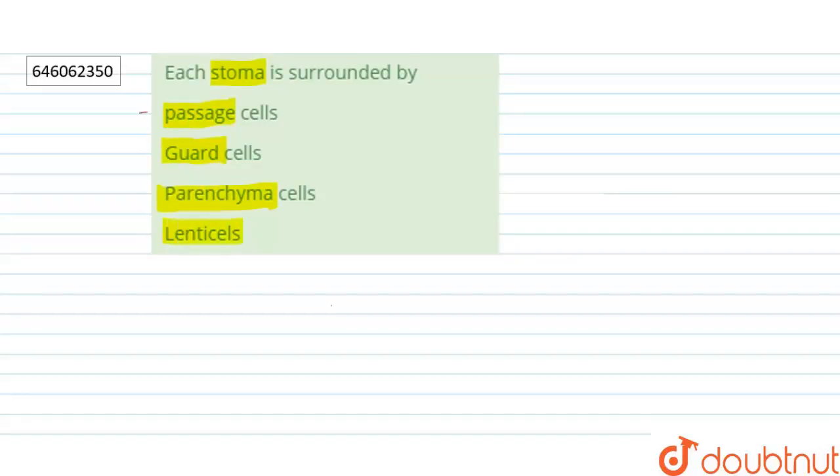The first option is passage cells. They are the thin-walled cells which are found in the endodermis of vascular plants.